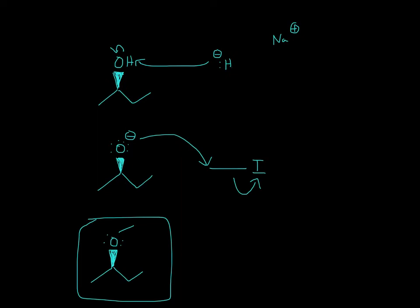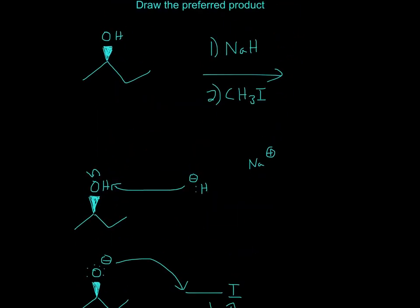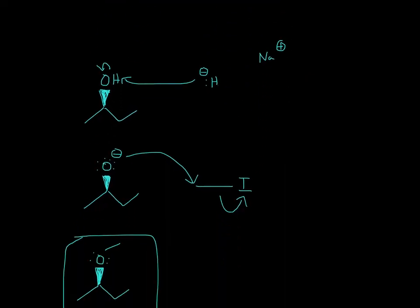And now the oxygen has a negative charge. And the second part is CH3I, CH3I. So the negative charge will attack this spot right here, and then the electrons here in this bond will go to the iodine.